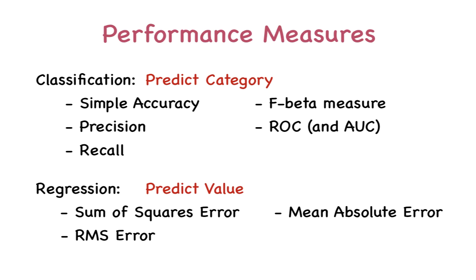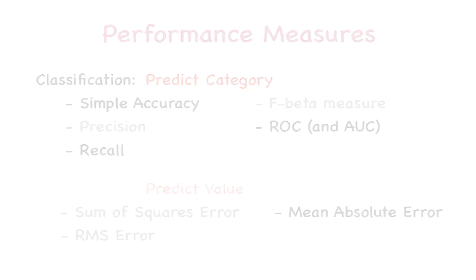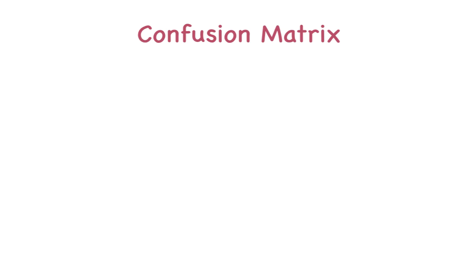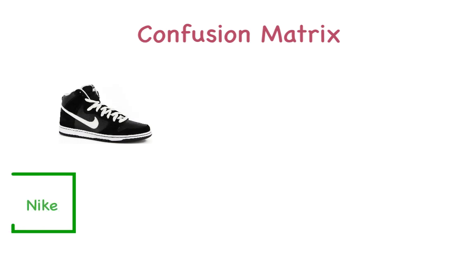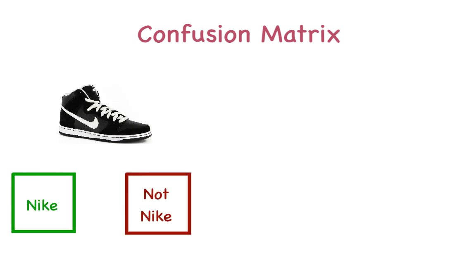In this video, I'll only be touching on the classification type performance measures. We'll handle regression performance measures in another video. Before starting with the classification performance measures, it's important to understand the confusion matrix. Say you want to construct a system that determines if a sample shoe is either Nike or not — a classification problem where shoes are classified into two predefined categories.